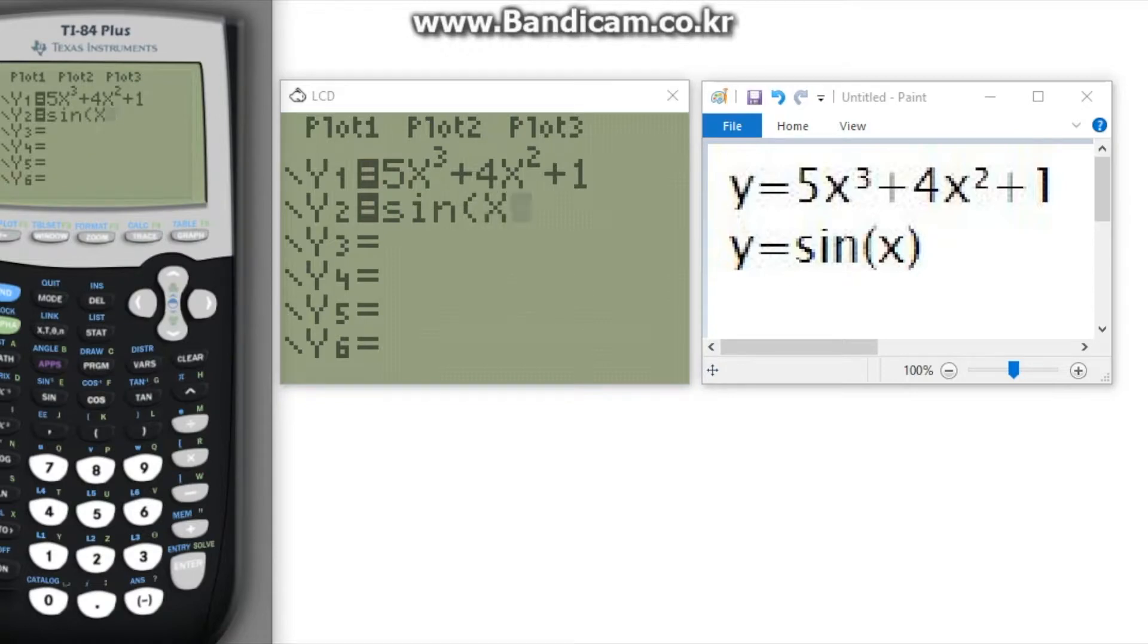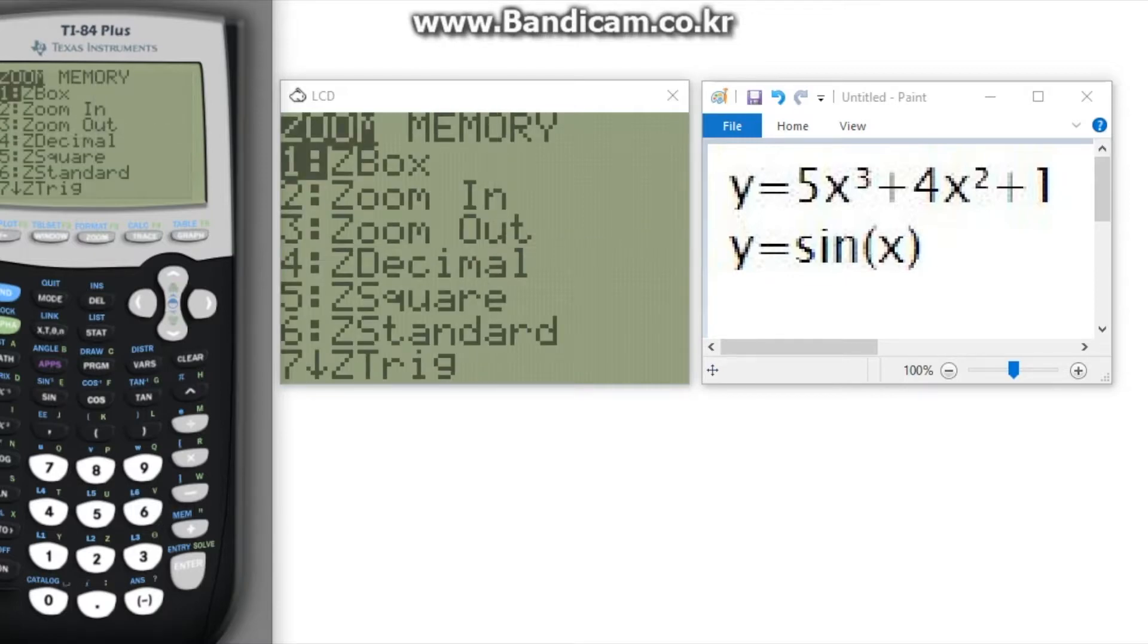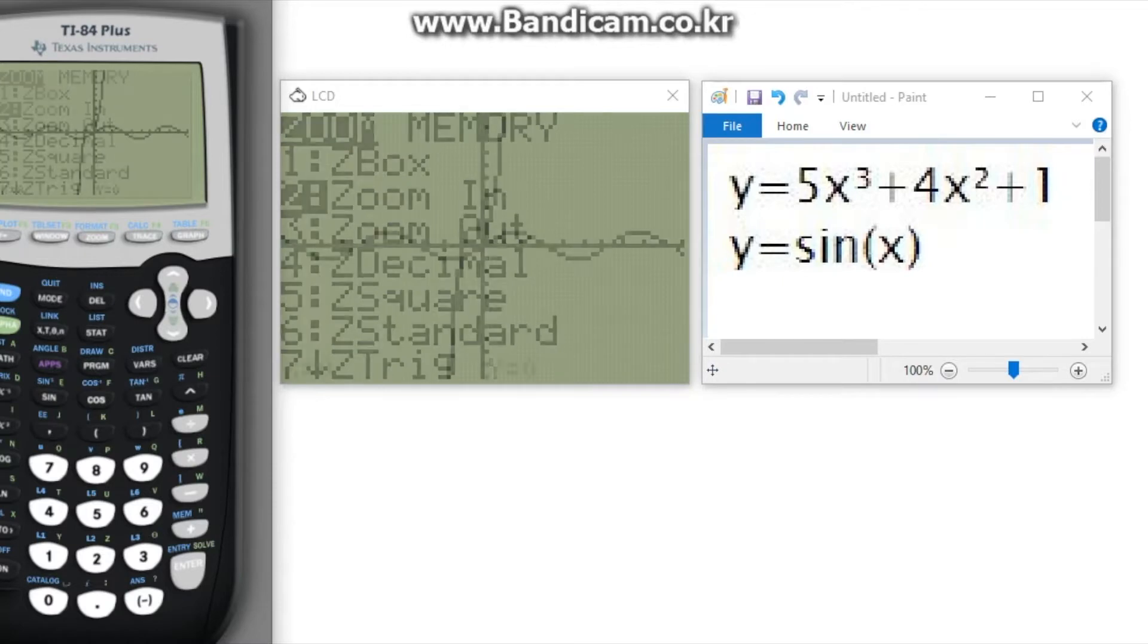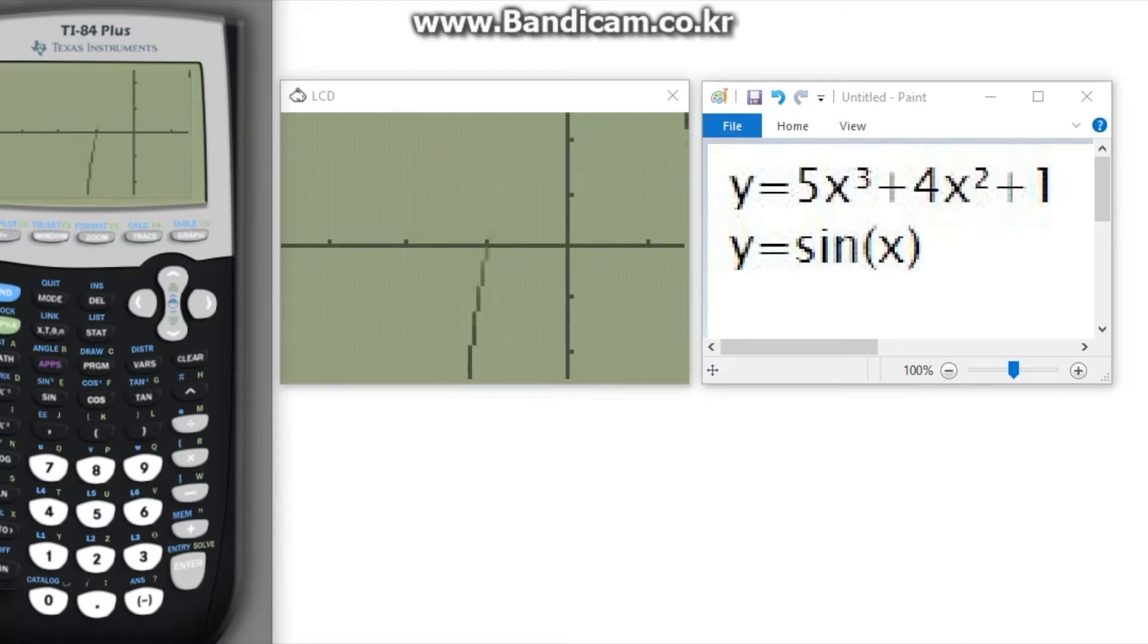Once again, we will need to zoom into the graph to focus on the intersection part. In the first example, we used the window to zoom in but for this example, we will be trying another method. First press zoom and once the zoom screen pops up, scroll down to 2 which says zoom in and press enter.